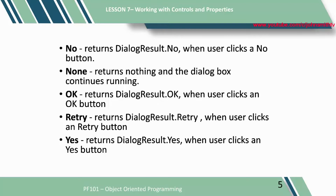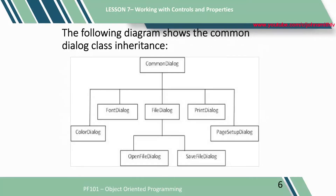6. OK — returns dialog result OK when the user clicks an OK button. 7. Retry — returns dialog result retry when the user clicks a retry button. 8. Yes — returns dialog result yes when the user clicks a yes button. The following diagram shows the common dialog class inheritance. Common dialog inherits: 1. Color dialog. 2. Font dialog. 3. File dialog. 4. Print dialog. 5. Page setup dialog.